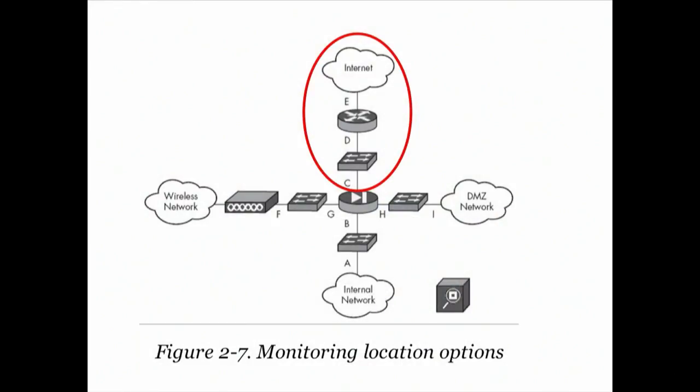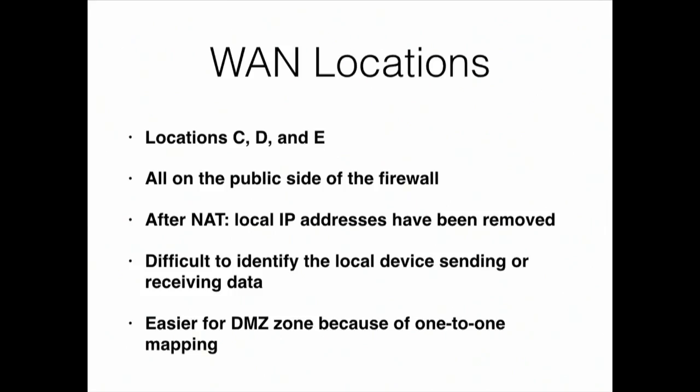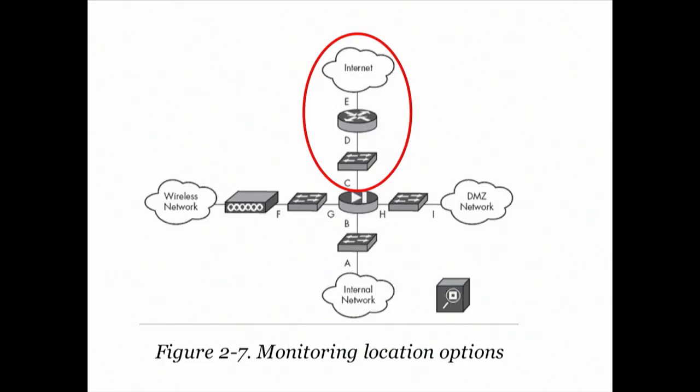If you look only on the WAN side, these guys have been through NAT — so if you see something bad happening you'll have trouble deciding which local device was its origin. In the DMZ zone you can probably tell, because you probably have a one-to-one mapping between public and private addresses on your servers. But for the rest, you've got dynamically assigned addresses, so if you find an infected machine it might be a different machine having that address later and you don't really know which one it is.